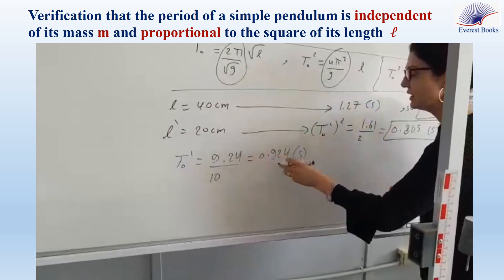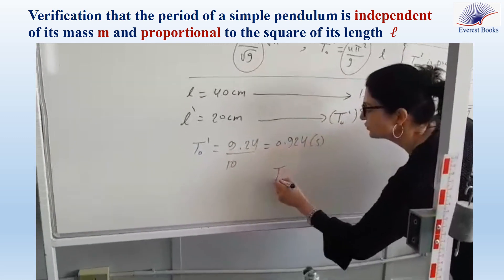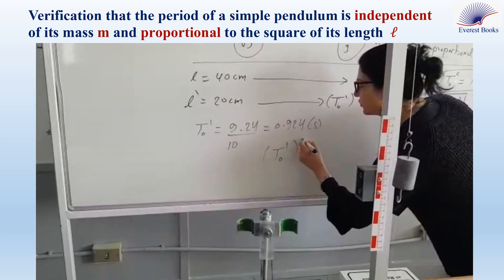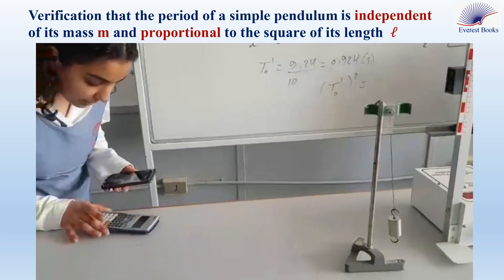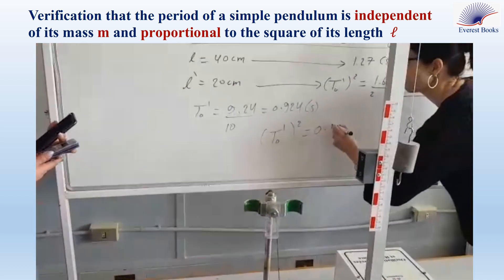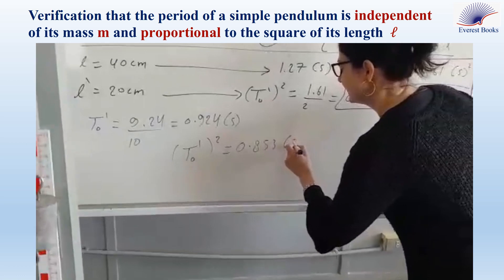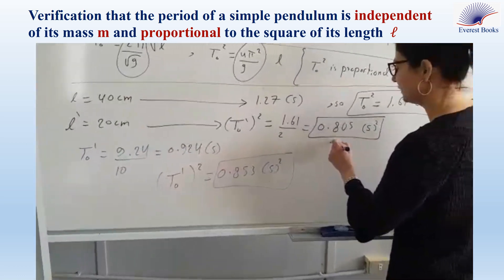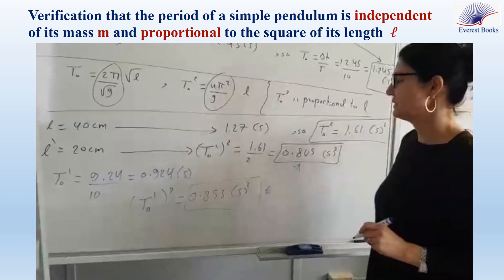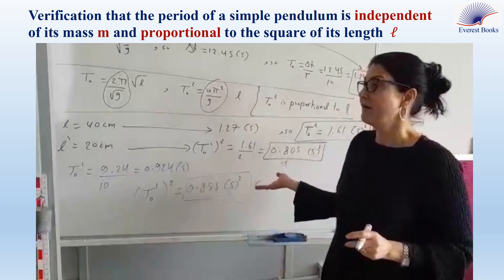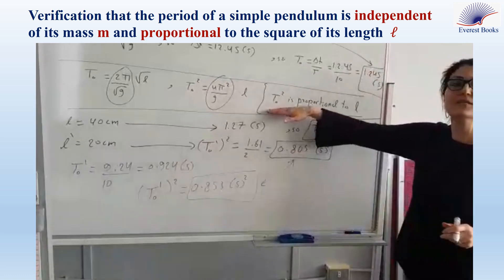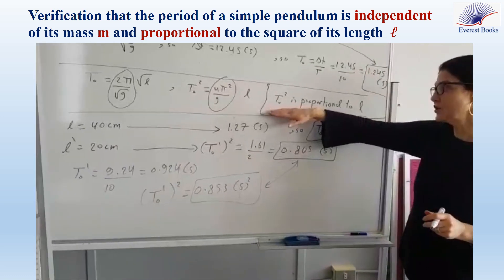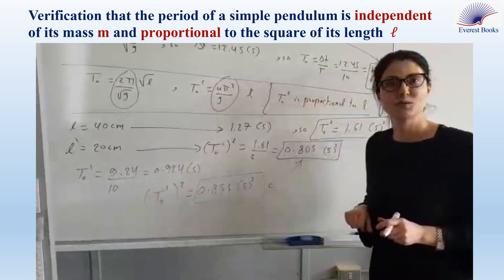Now, please take the square of this value. 0.843. Now, look at the calculated value and experimental value. They are very close. And so, this result is verified. The square of the natural period is proportional to L.